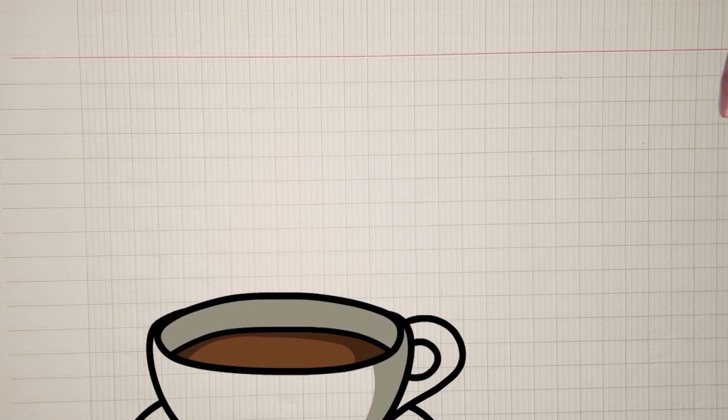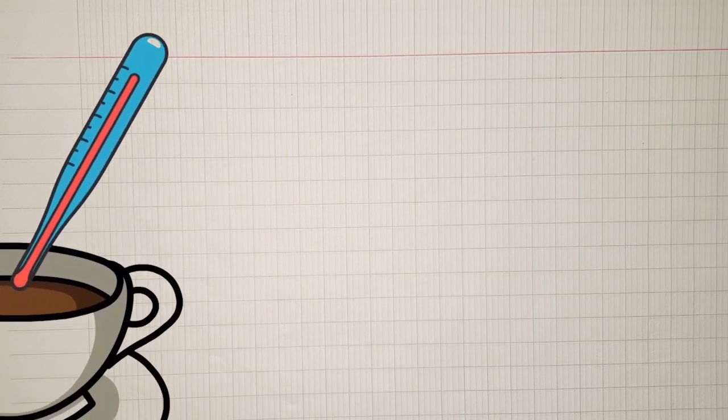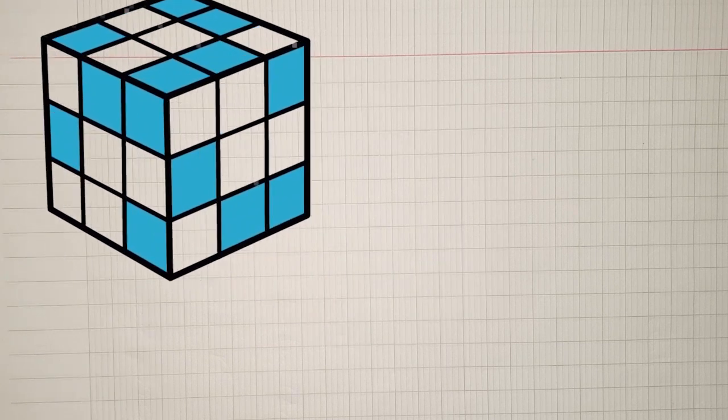For example, a cup of tea is warm, as it has a temperature that can be measured with a thermometer. Likewise, volume is a physical quantity that can be measured by a meter scale.